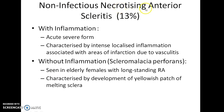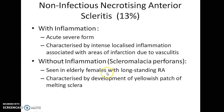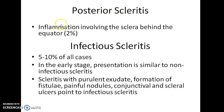Non-infectious necrotizing anterior scleritis accounts for 13% of cases. There are two types: necrotizing scleritis with inflammation and necrotizing scleritis without inflammation. Necrotizing scleritis with inflammation is an acute severe form characterized by intense localized inflammation associated with areas of infarction due to vasculitis. Necrotizing scleritis without inflammation, also known as scleromalacia perforans, is seen mostly in elderly females with long-standing rheumatoid arthritis and is characterized by development of a yellowish patch of melting sclera.